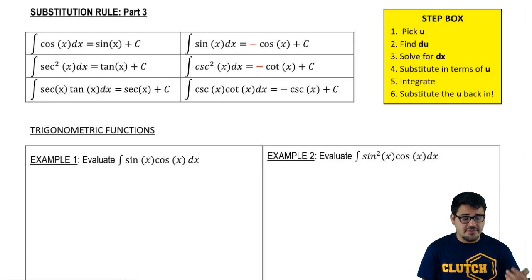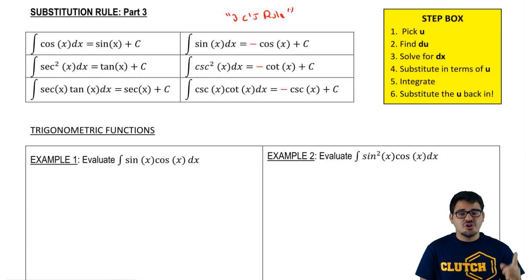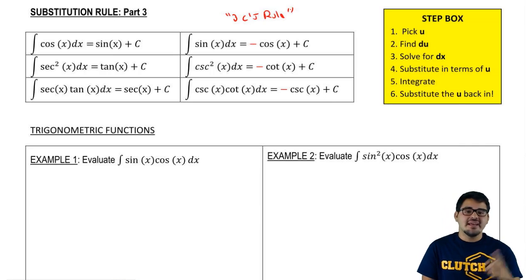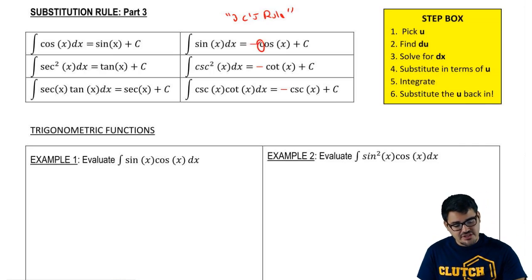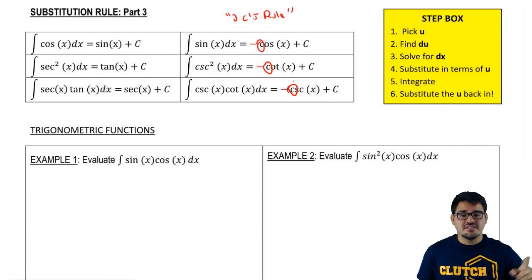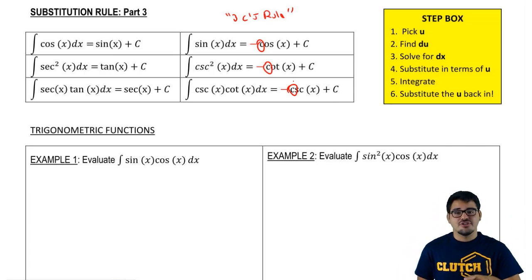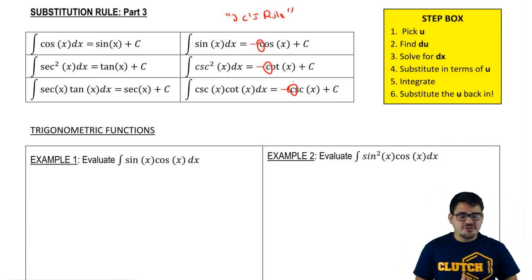We also talked about the 3 C's rule being opposite: it is not that integrating a function starting with C gives a negative result — rather, when you end up with a trigonometric function that starts with C, you get a negative integral. It's kind of backwards. Now let's apply that information to actual u-substitution.